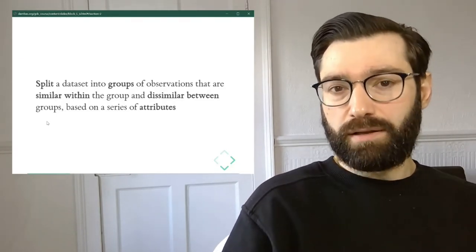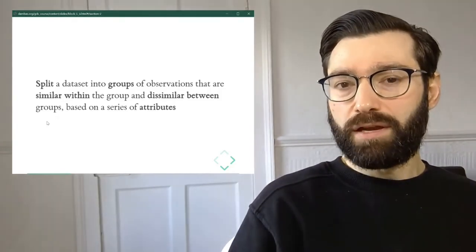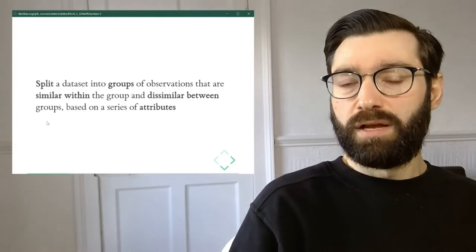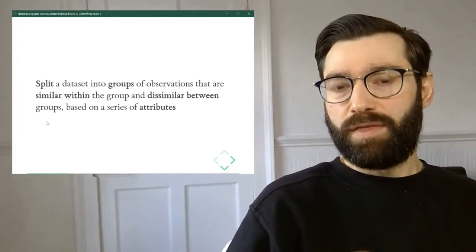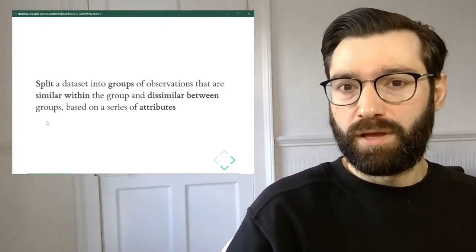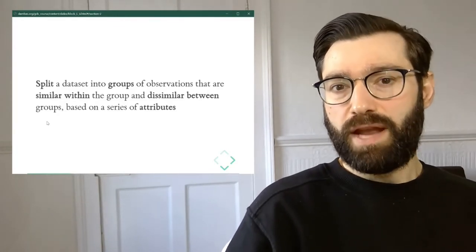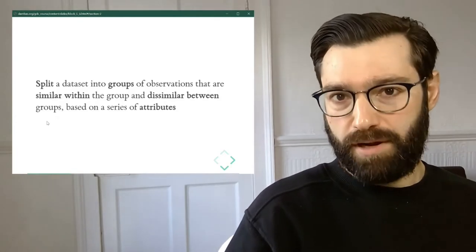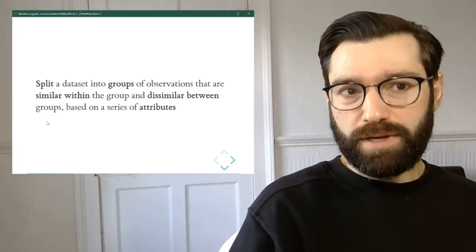For the neighborhood example, we can think of every column as a different type of characteristic. For example, the average income, the number of people with education above university, the number of parks, etc. Now, what clustering is about is splitting this dataset.